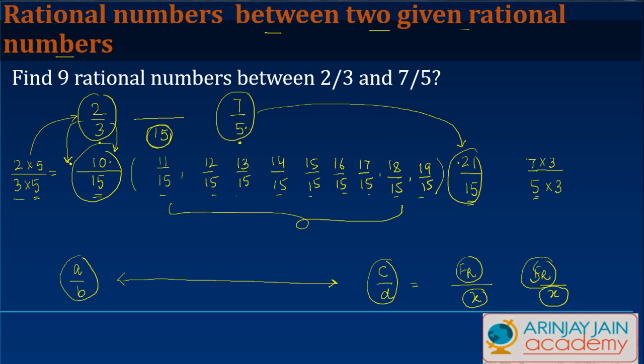So what was the process? It was simple - I just converted the denominator of these two in such a fashion that both of them have a common denominator. To achieve that, I multiplied the numerator by the same number.